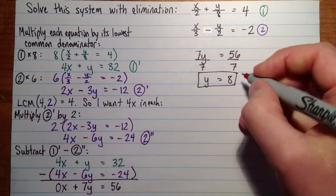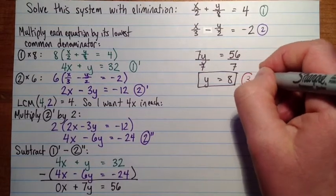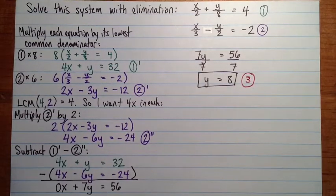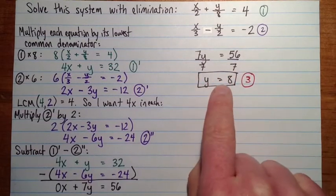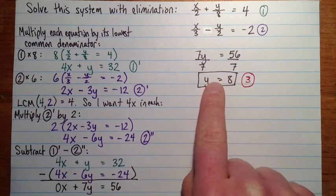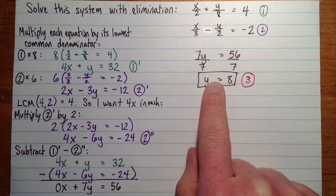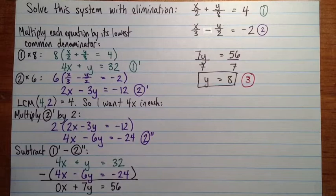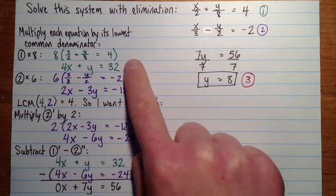So that's excellent. That's the hard part done. We've got one of the variables isolated. So now to solve, we've got y. We know that y is 8. We want to find x. So we'll substitute equation number 3 into one of the equations. We can substitute into 1 or 2.